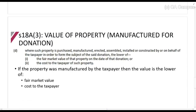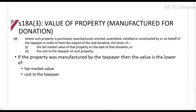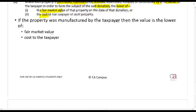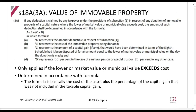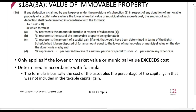What about the value of property that you've manufactured or purchased specifically to donate? If property has been purchased or manufactured by or on behalf of the taxpayer for the donation — meaning you buy or make something specifically to give away — then you receive the lower of fair market value or cost. Again, this is not very common.